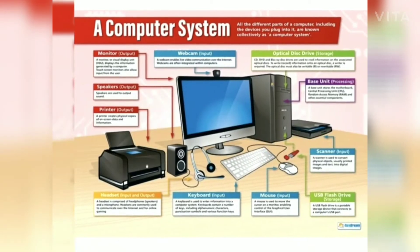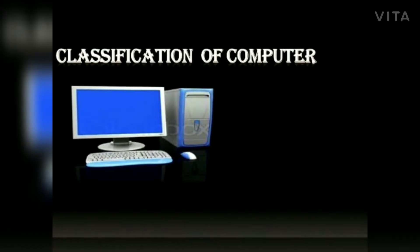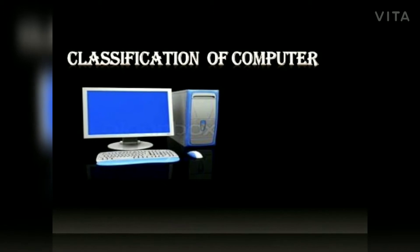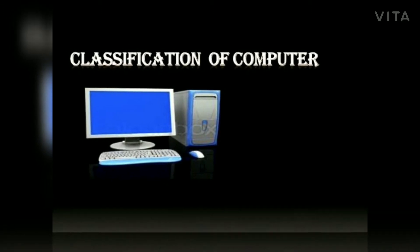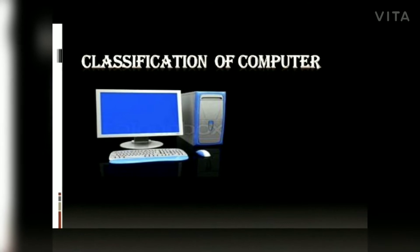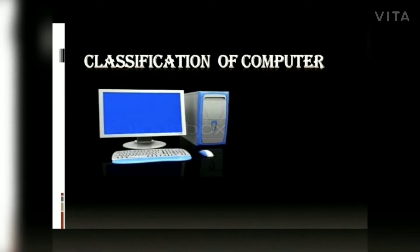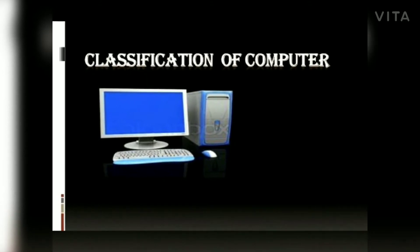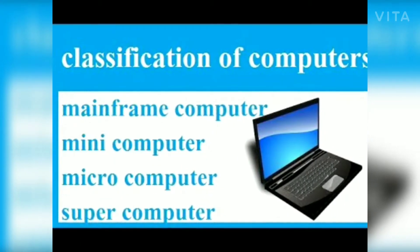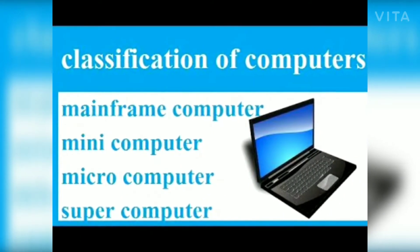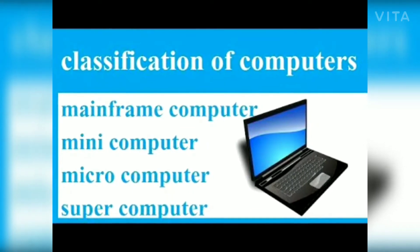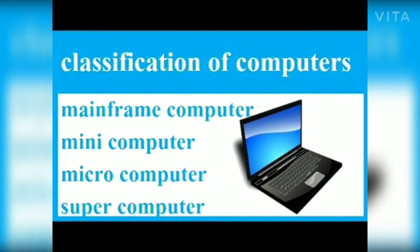In this chapter we study about the computer system, and the first topic is classification of computers. Computers are classified into four categories based on their size and processing power: micro computers, mini computers, mainframe computers, and supercomputers.